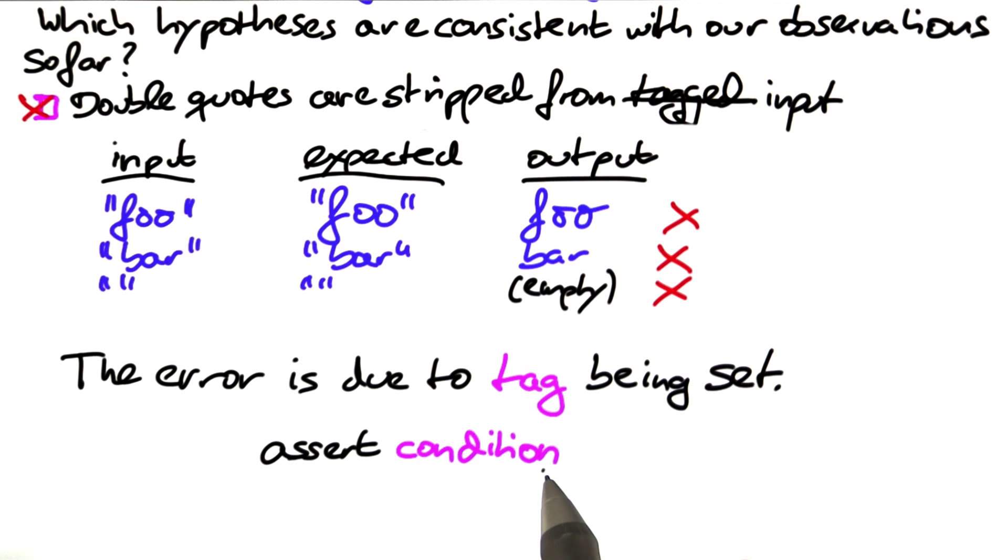That is, if the condition holds, we proceed as usual. If the condition does not hold, we throw an exception.